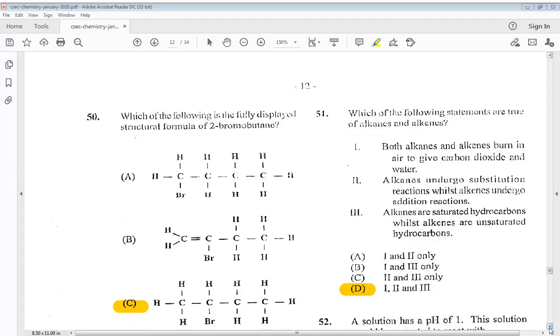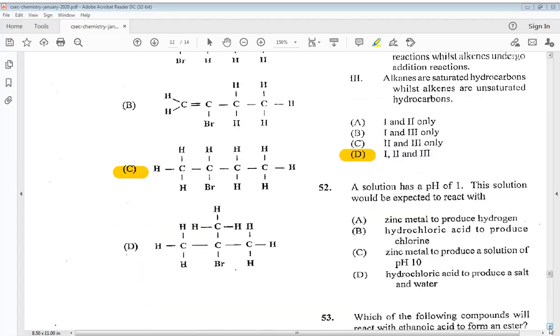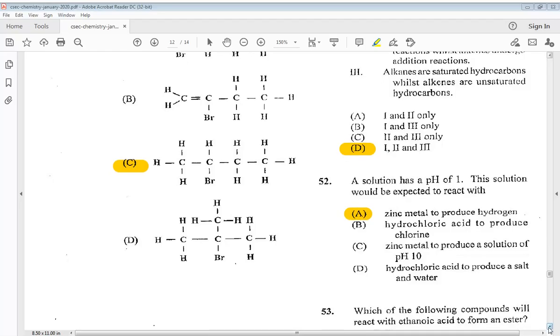Question 52 says a solution has a pH of 1. This solution would be expected to react with A zinc metal to produce hydrogen, B hydrochloric acid to produce chlorine, C zinc metal to produce a solution of pH 10, or D hydrochloric acid to produce a salt and water. So it is A, zinc metal to produce hydrogen.